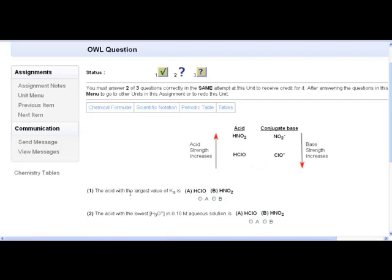So let's try one more. The acid with the largest value of Ka is, well HNO2 is a stronger acid than HClO. So the larger Ka is going to be associated with HNO2. So click on D.